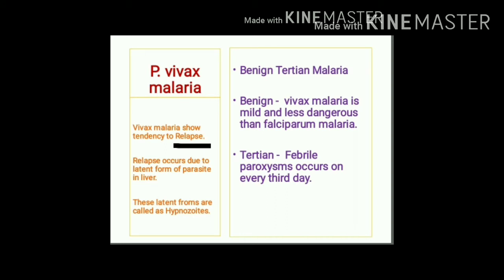Plasmodium vivax malaria is also called benign tertian malaria — benign because it is milder than falciparum, and tertian because febrile paroxysms occur every third day. The most important characteristic feature is relapse, which occurs because of latent forms of the parasite in the liver called hypnozoites. Treatment must therefore include drugs to prevent relapse.